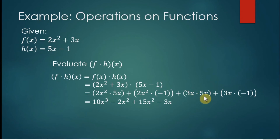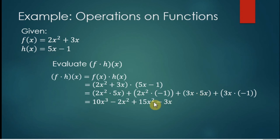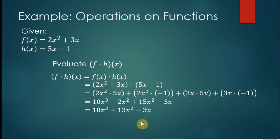For the third term: 3 times 5 is 15, and x times x gives x squared because we add the exponents 1 plus 1. Then 3x times negative 1 is negative 3x. We can further simplify this as 10x cubed plus 13x squared minus 3x — we combined negative 2x squared plus 15x squared to get 13x squared.